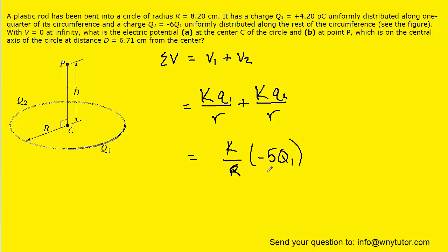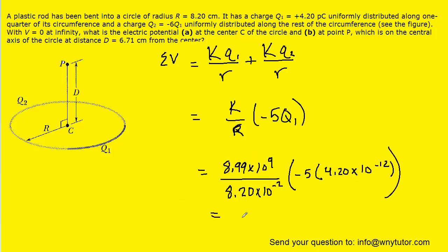And then we can simply plug in the known values. k is a constant, it's 8.99 times 10 to the ninth. r is given to us in centimeters, so we'll multiply it by 10 to the minus 2 to convert it into meters. And then picocoulombs for q1 would be multiplied by 10 to the minus 12. And when we punch that into our calculators, we should get roughly negative 2.30 volts. And so this is the correct answer for the total electric potential present at point c.